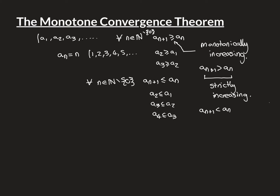The theorem says: if you have a monotonically increasing sequence that is bounded above, then the sequence converges to a limit. We need there to exist some upper bound u in the real numbers such that u ≥ a_n for all n in the natural numbers. The sequence a_n = n fails this: there's no real number greater than or equal to every natural number, so it's not bounded above, and indeed it has no limit.